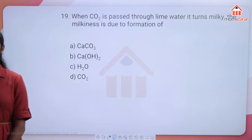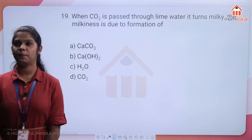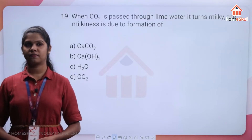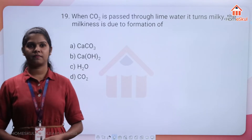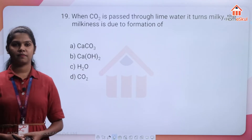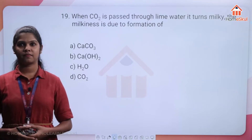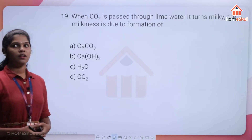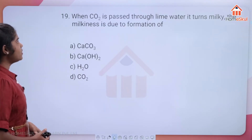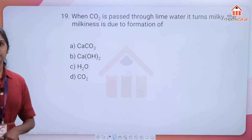Observe the options carefully. What happens when CO2 is passed through lime water — it turns milky. The milkiness is due to which compound: CaCO3, Ca(OH)2, H2O, or CO2?